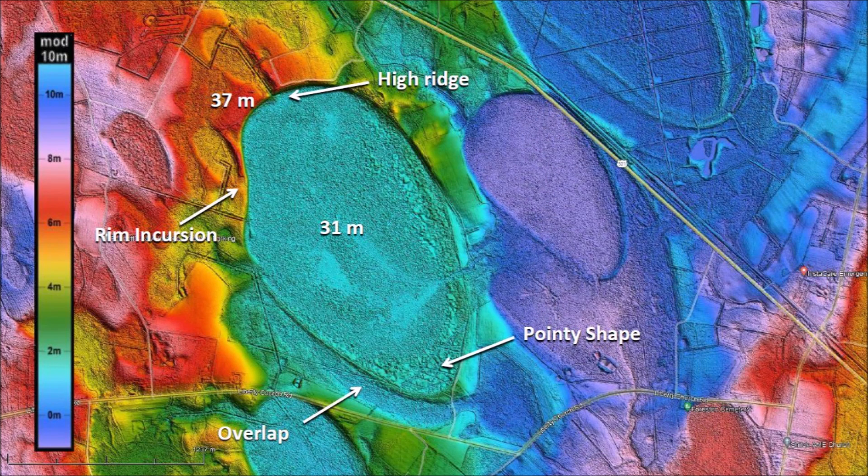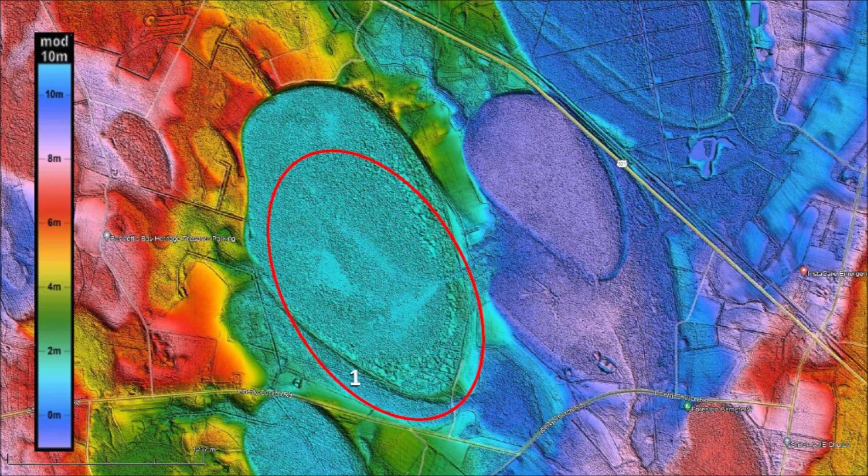The two other remarkable features of Bennetts Bay are its pointy shape and the overlap with the previously emplaced bay. Later we will see that the pointy shape is produced by the overhang of a flange of a penetration funnel into the cavity of a previous impact. We can now postulate the sequence of events that produced the landscape of Bennetts Bay.